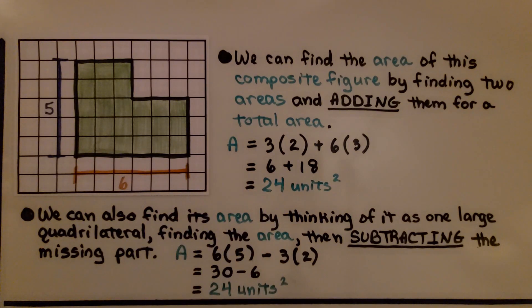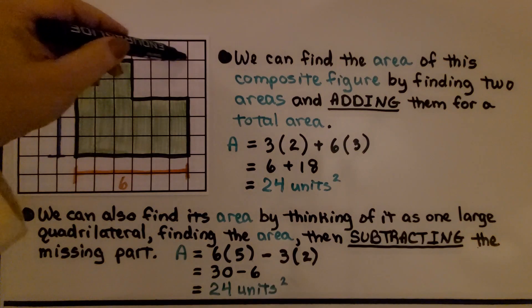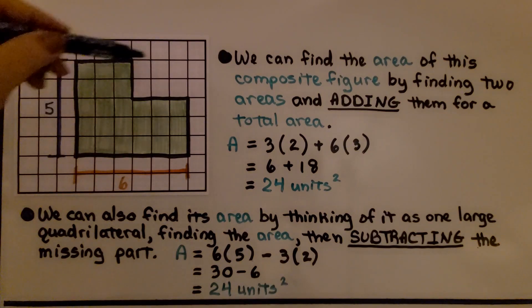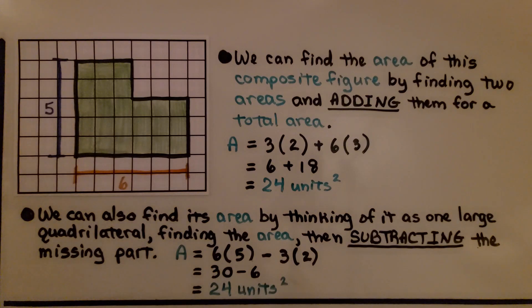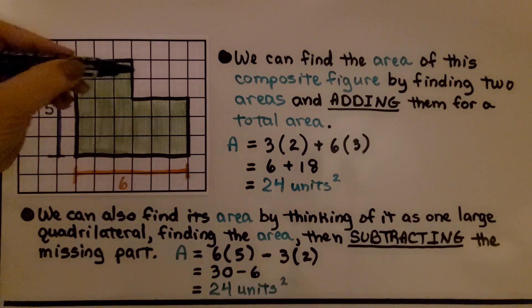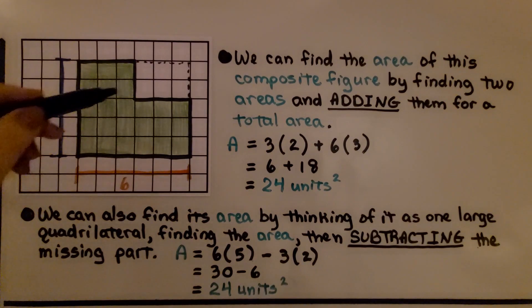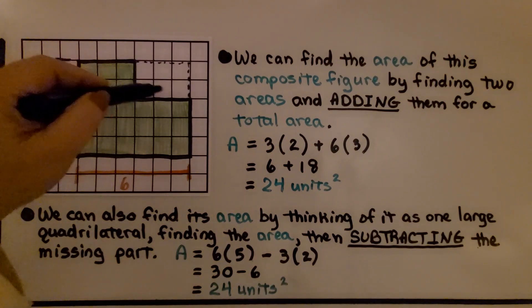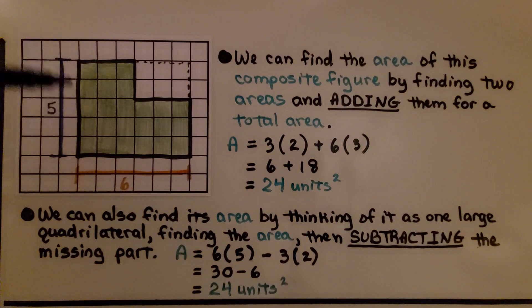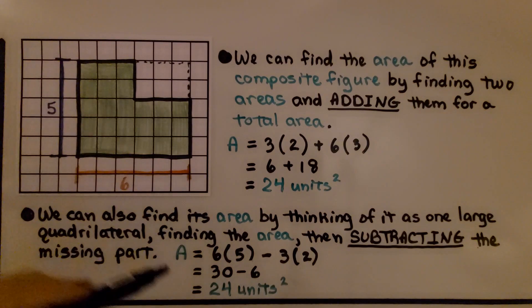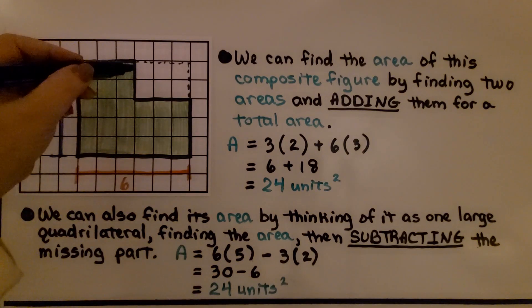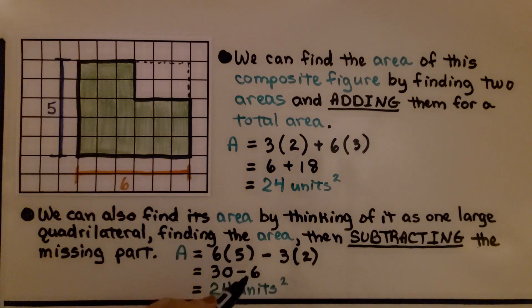But we can also find its area by thinking of it as one big, large quadrilateral, finding the area, then subtracting this missing part. We can pretend like this piece is there and just do the 6 times 5, which is 30, then subtract the 3 times 2, which is 6. Either way, we're going to get 24 units squared.